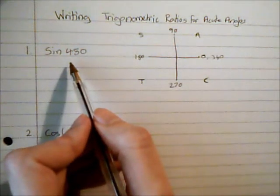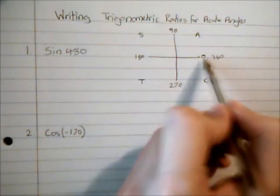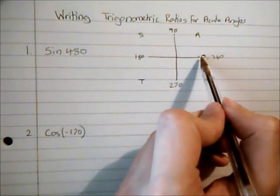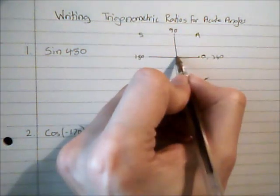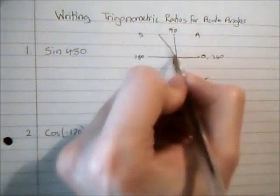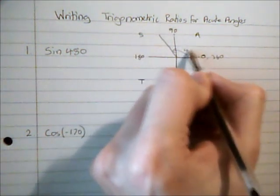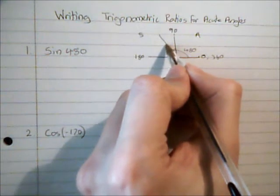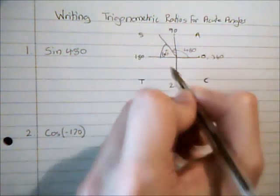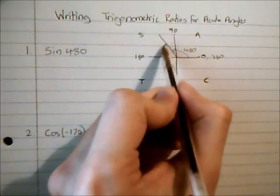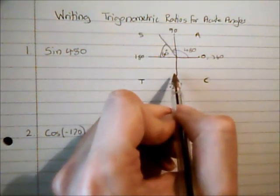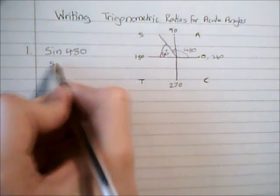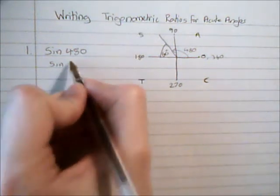So sine 480, well 360 degrees would be all the way around to here. And then we're going to go another 120 degrees. So another 120 degrees means that we've now rotated a total of 480 degrees. And the acute angle associated with that is this angle here which is 60 degrees. We always want to look at an acute angle that it makes with the horizontal using this diagram. So sine of 480 is equivalent to sine of 60.